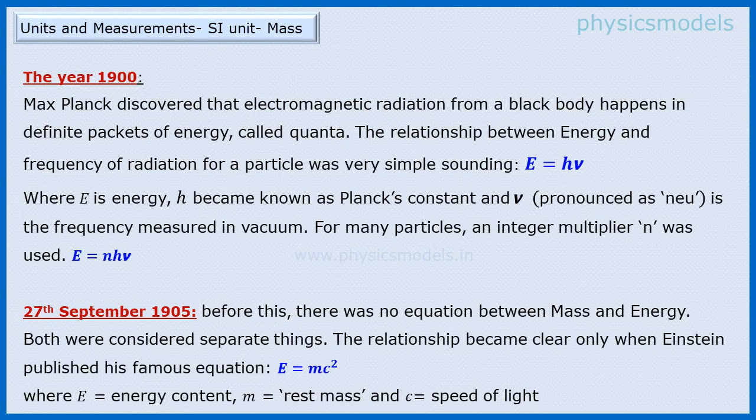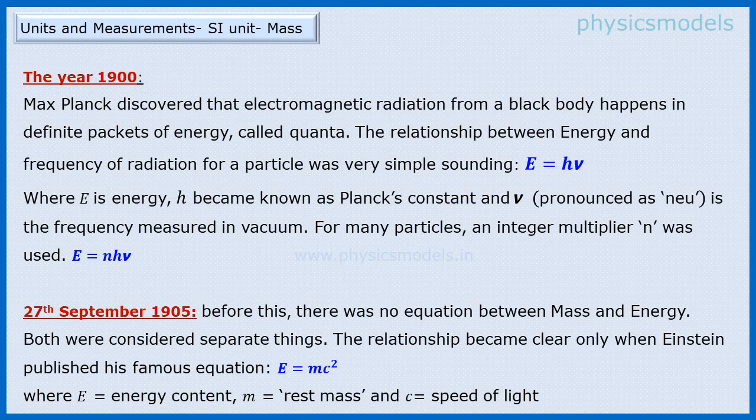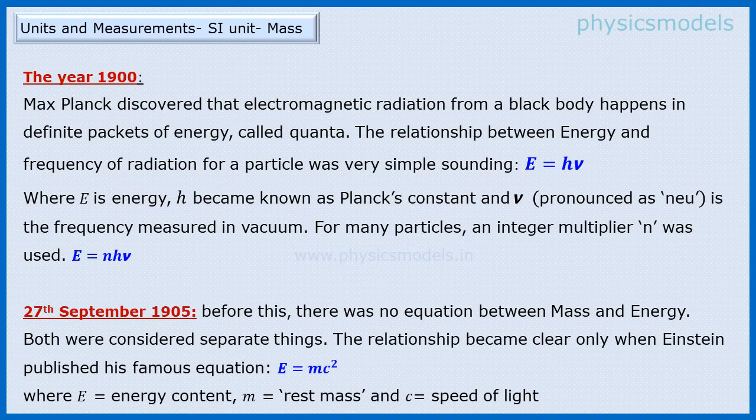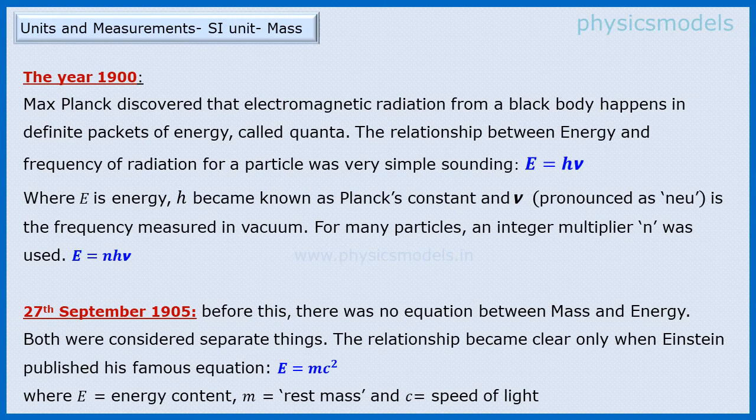In 1900, Max Planck found that electromagnetic radiation from a black body has nothing to do with the material of the black body. Rather, the radiation has an energy E which is proportional to the frequency of the radiation only, frequency being ν. Since energy is proportional to ν, the constant of proportionality was called H and came to be called Planck's constant. So energy was equal to H into ν.